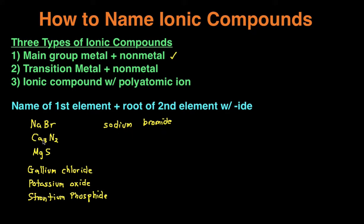Another example: Ca₃N₂. We have two elements — the first element is CA, the second element is N. For the first element we just name it: the name of CA is calcium. The second element is N, which is nitrogen, but we add -ide to the root of nitrogen, which then becomes nitride.